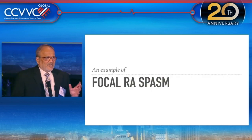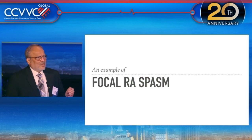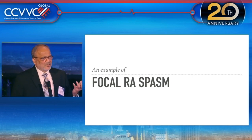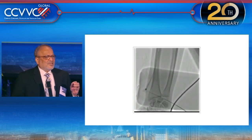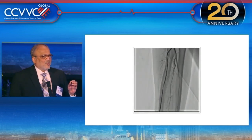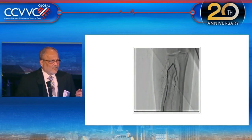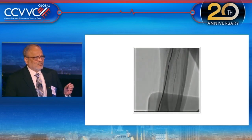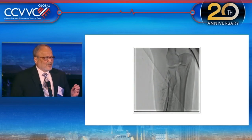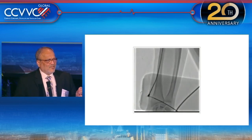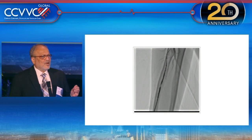Focal radial artery spasm is a problem for any beginning radialist. It can happen with intermediate experience or even the most experienced radialist. Whenever you experience resistance with your wire or catheter, you have to inject and see the reason for it. Diluted contrast was added to the nitroglycerin and verapamil combination, and you can see how the spasm disappears.